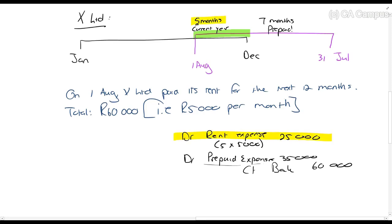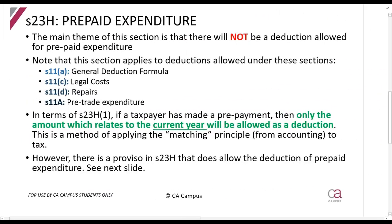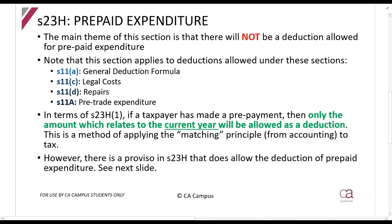If you look at Section 23H, it says that if you do a prepaid expense like in this example, Section 23H says it will not be allowed as a deduction. That is the starting point. Section 23H applies to everything that happens in the general deduction formula. That is very broad: everything under legal costs, repairs, Section 11A pre-trade expenditure, and other amounts like Section 11E.